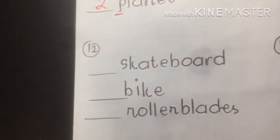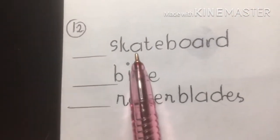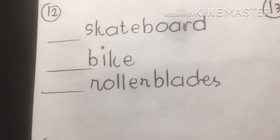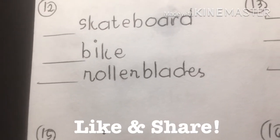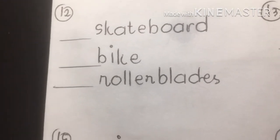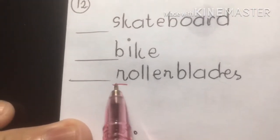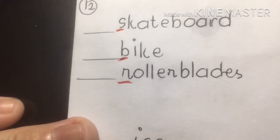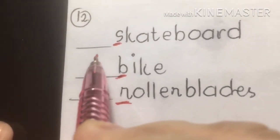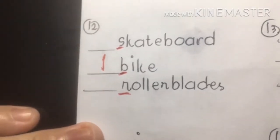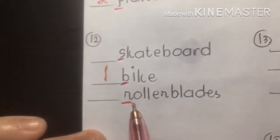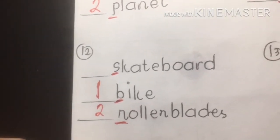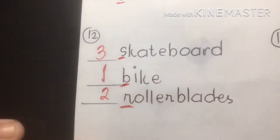Number twelve: skateboard, bike, roller blades — game instruments used for exercise. Underline the initial sounds: R, B, and S. B is first — bike. R is second — roller blades. And S is third — skateboard. So: bike, roller blades, skateboard.